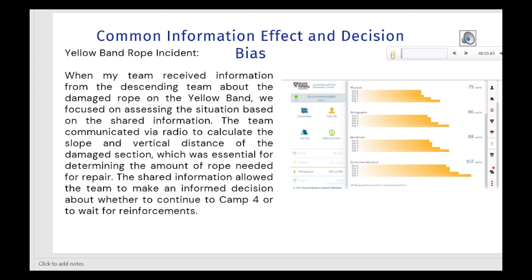The second crucial incident was the yellow band rope accident. During our ascent, we received vital information from a descending team regarding a damaged rope on the yellow band. Acting swiftly, we focused on assessing the situation based on the shared information. Communication was key during this moment of crisis. Through radio communication, we collaborated to calculate the slope and vertical distance of the affected section, which was essential in determining the exact length of rope required for the repair.